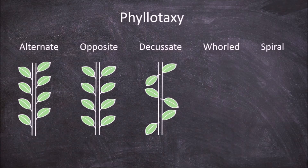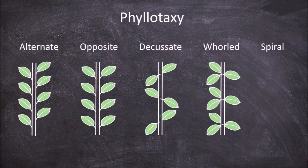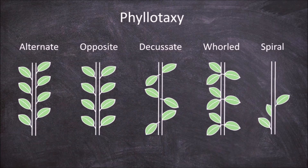If a plant has whorled phyllotaxy, then there are more than two leaves at each node. If a plant has spiral phyllotaxy, it is similar to alternate phyllotaxy, except instead of the nodes being on two sides of the stem, they move up the stem with a specific change in angle moving around the stem.